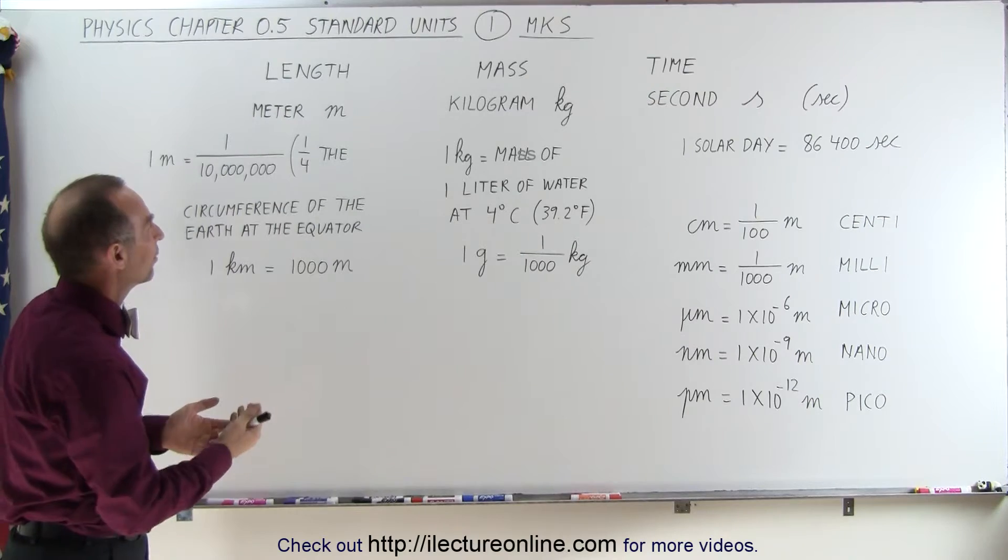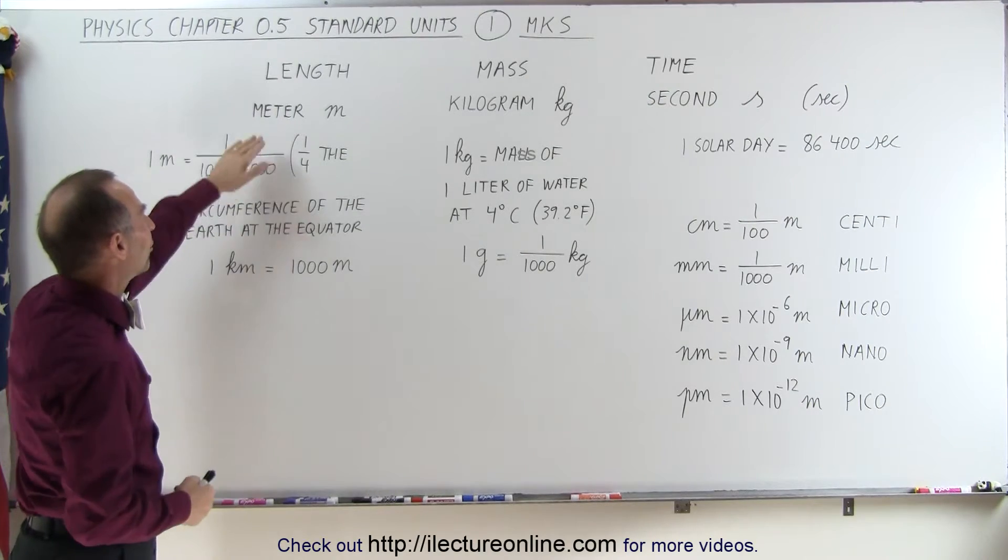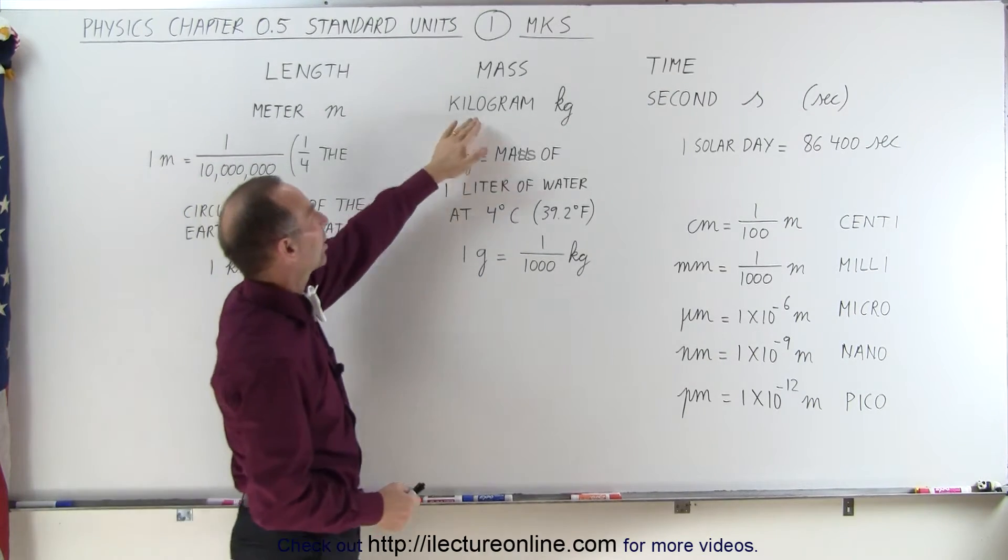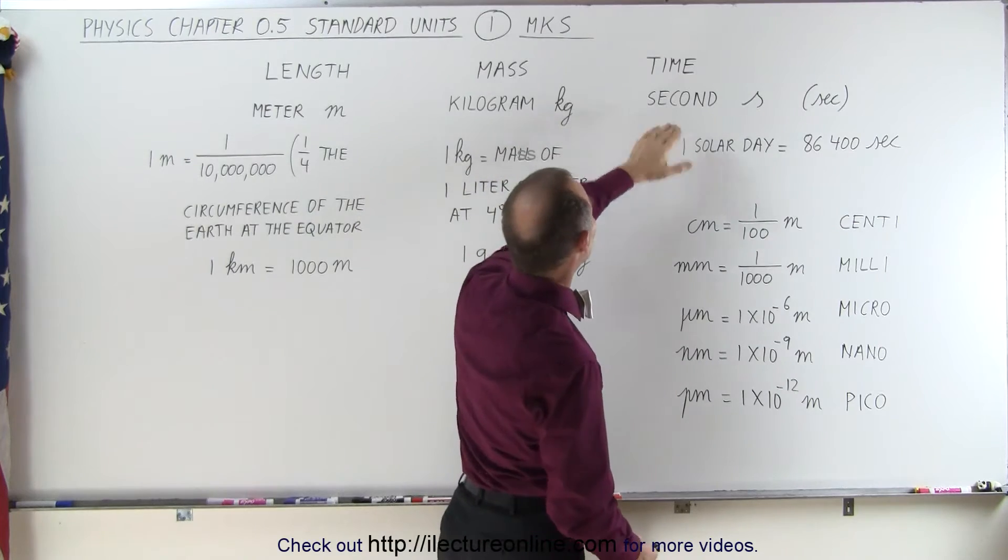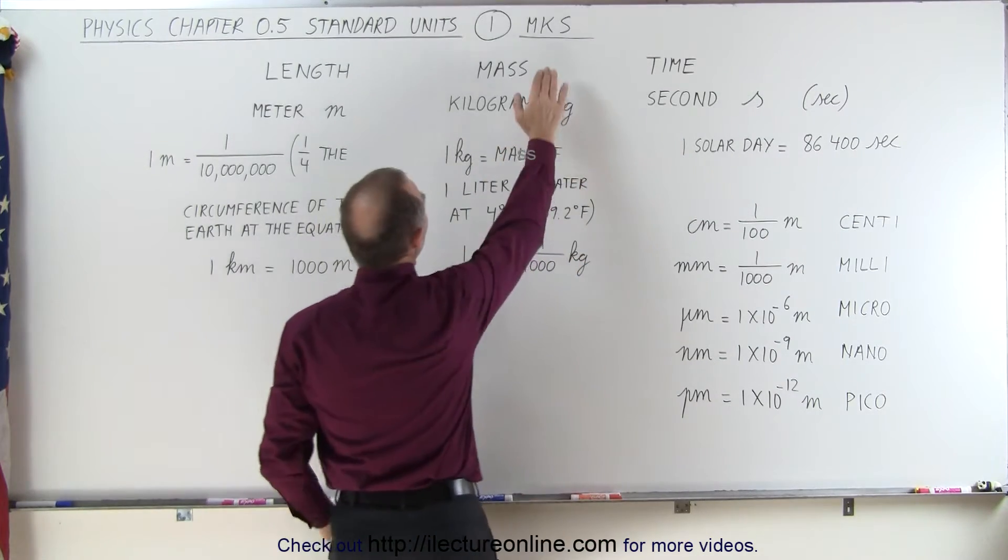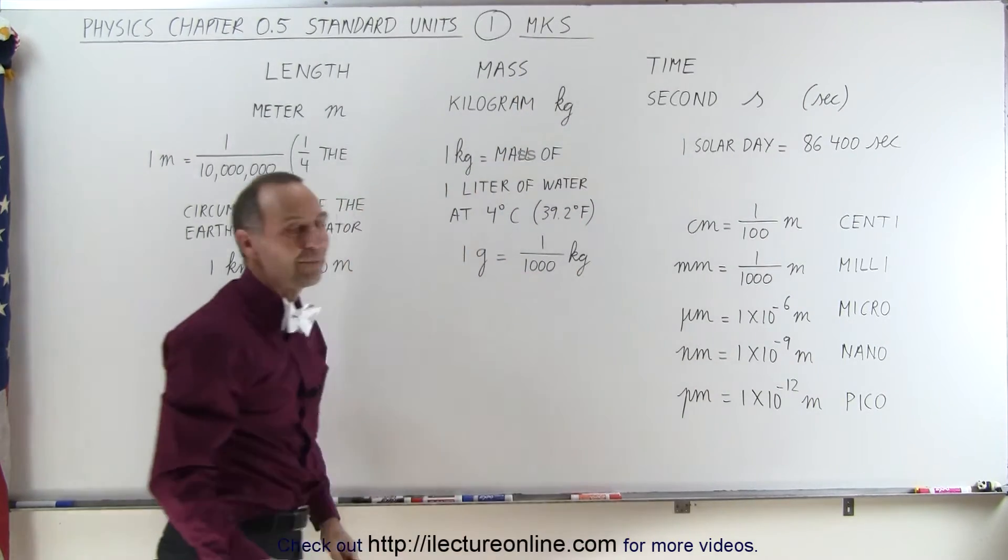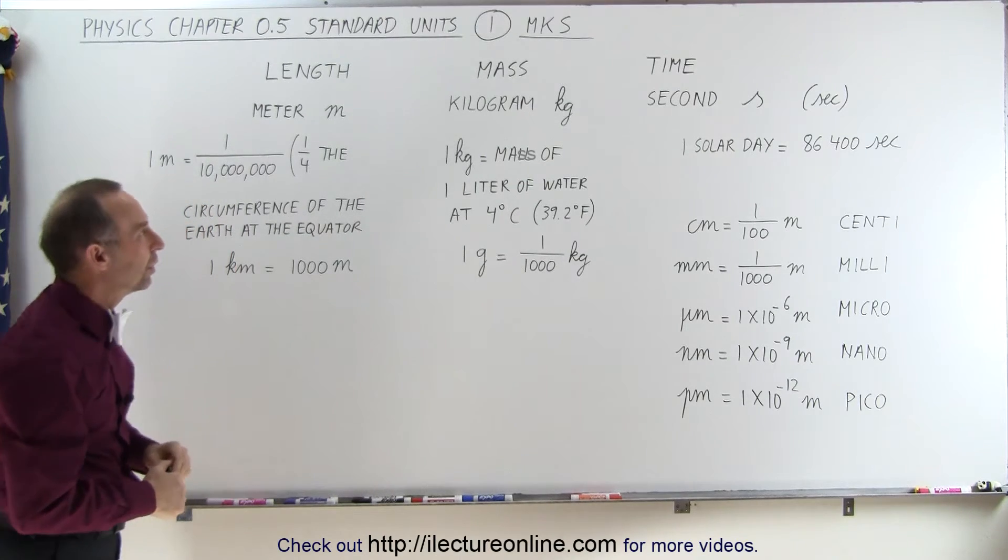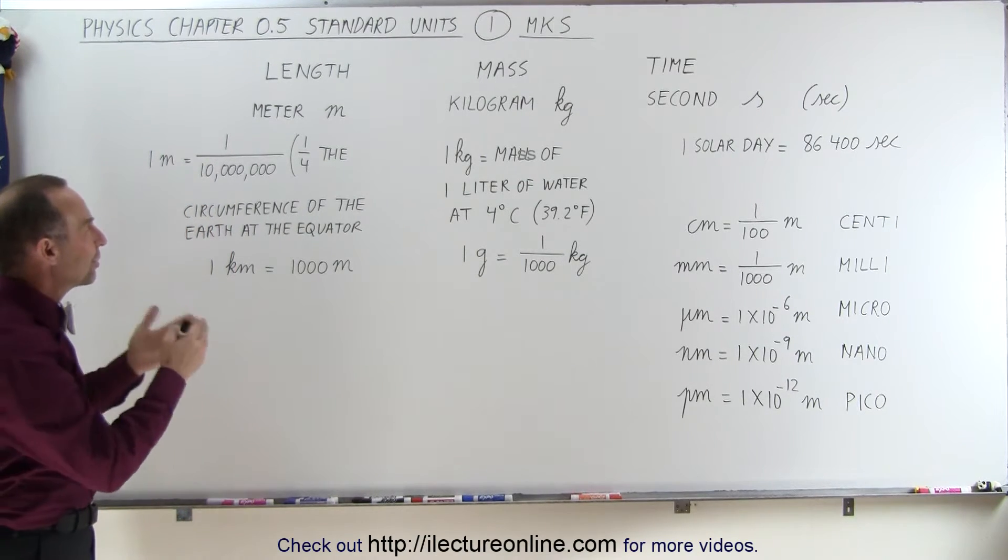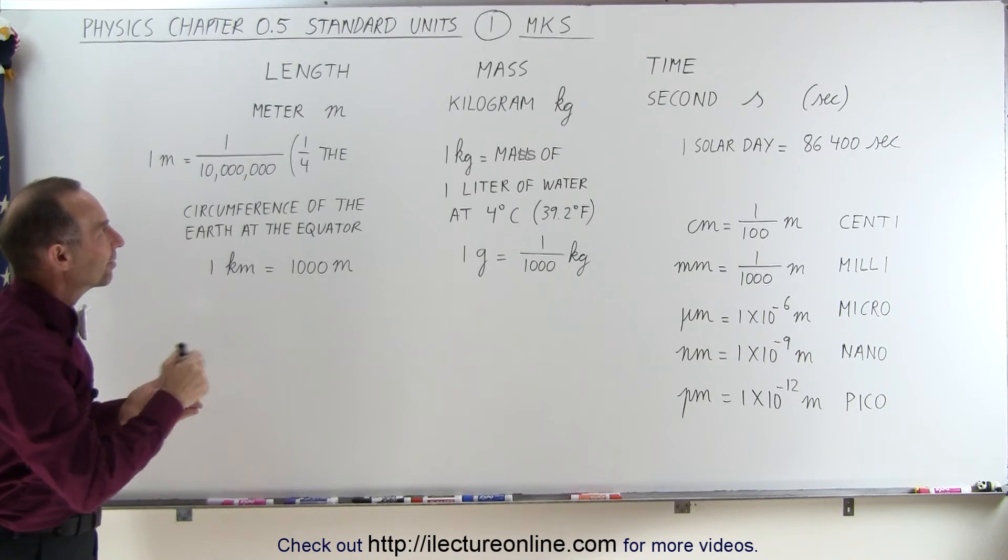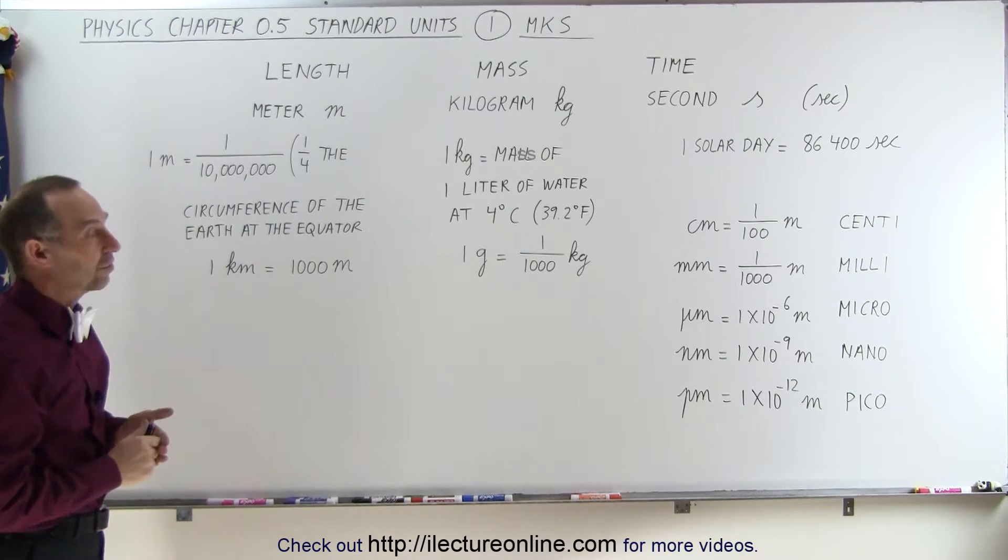So, length, mass, and time, and the units for length is meters, the unit for mass is kilograms, and the unit for time is seconds. We therefore call this the MKS system, the metric system as it's also known, which always boils down to these three basic units of length, mass, and time, called meter, kilogram, and seconds.